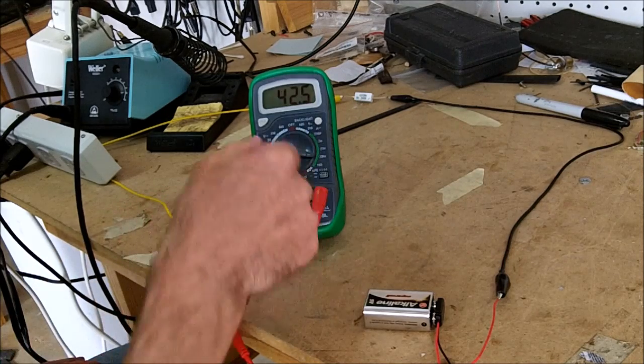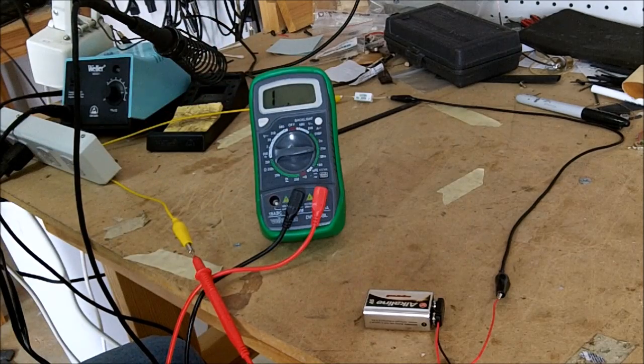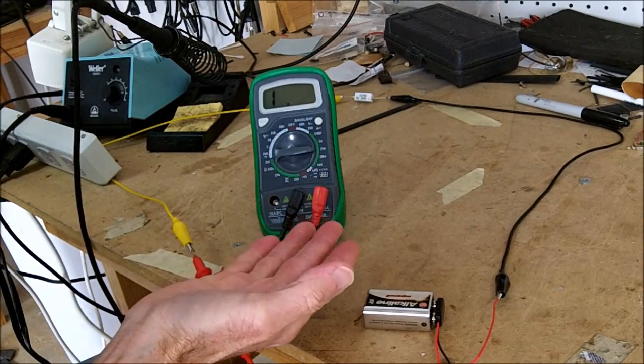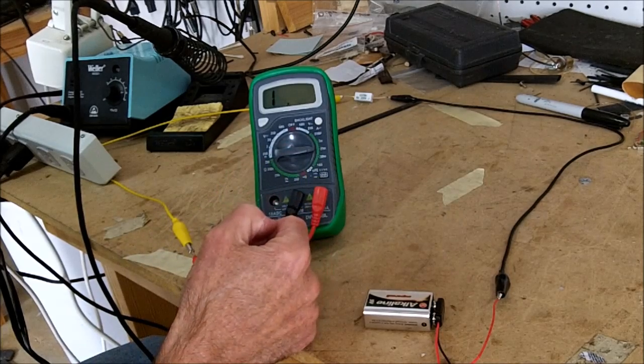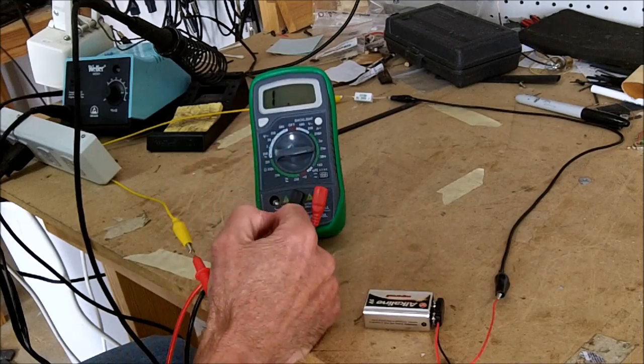If you had set it on the wrong scale—let's say you set it on 20 milliamps—you're trying to measure 40 milliamps on a 20 milliamp setting and it just reads a 1, so it's not going to read correctly.